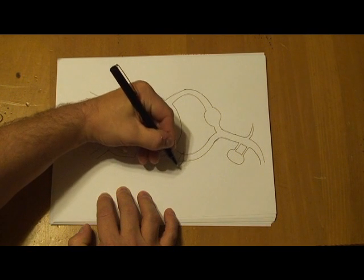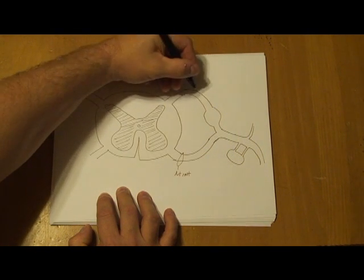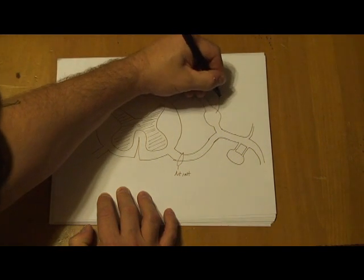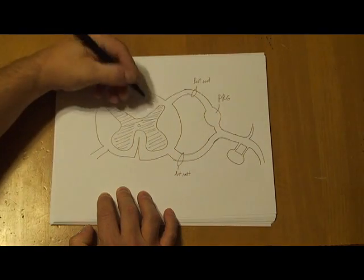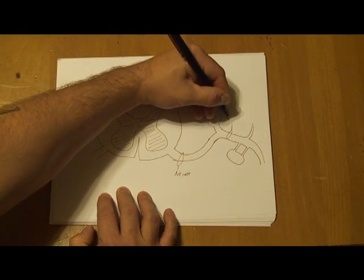So here we have the anterior root, likewise the posterior root, posterior root ganglion sitting right here, the spinal nerve.